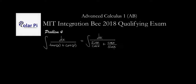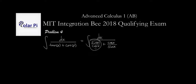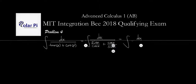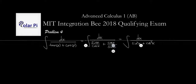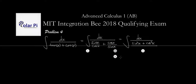And now in our next step, what we're going to do is lump these into one fraction by finding a common denominator. We'll find a common denominator by multiplying this fraction top and bottom by sine x, and then multiplying this fraction top and bottom by cosine x. So then we'll have the integral of dx divided by sine squared x plus cosine squared x over that common denominator of sine x times cosine x.